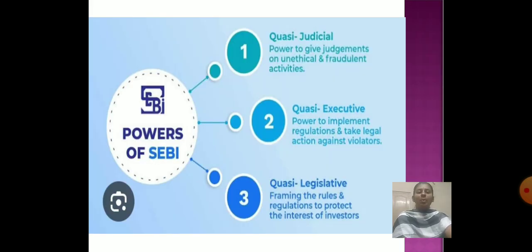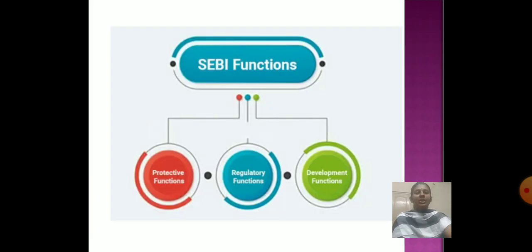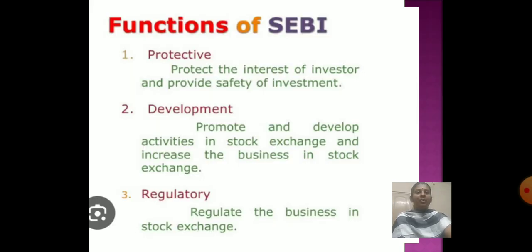SEBI has three powers: quasi-judicial, quasi-executive, and quasi-legal. There are three functions of SEBI — protection function, regulatory function, and development function. Under the protection function, SEBI protects investors and provides safety of investment. Under development, it promotes and develops activities in the security exchange and increases business. Under the regulatory function, it regulates business in the stock exchange.